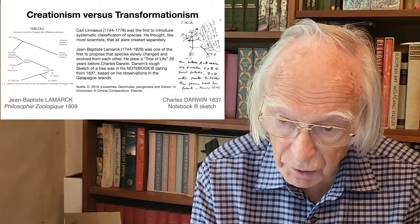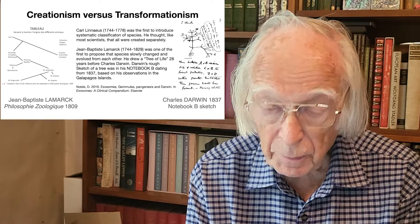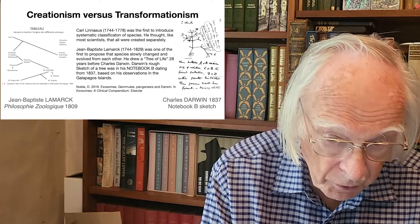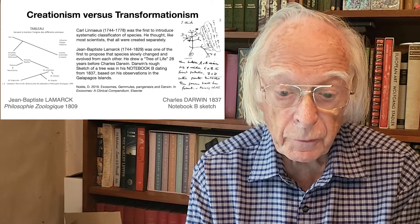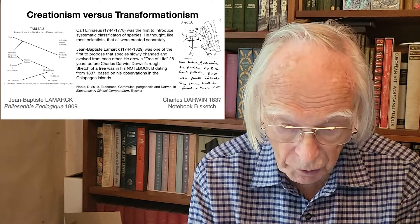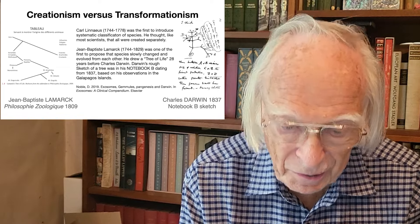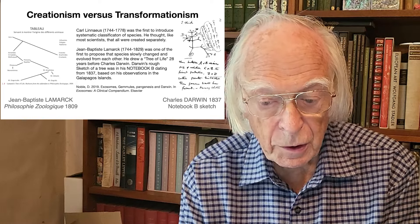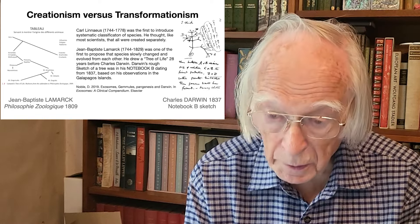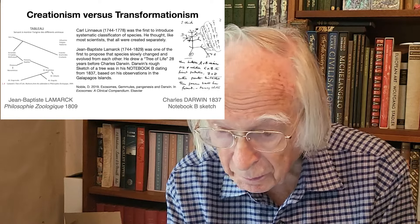Darwin's rough sketch on the right on this slide was in his notebook B, dating from 1837, based on his observations in the Galapagos Islands. Whereas Jean-Baptiste Lamarck's tree on the left was published in his great book Philosophie Zoologique, published in 1809 — just 28 years before Darwin drew his rough sketch. Darwin's diagram was an important sketch, but as you can see, it was just a sketch in his notebook, indicating various transitions between A and B.